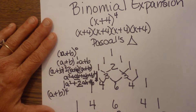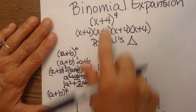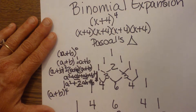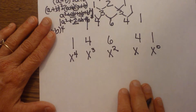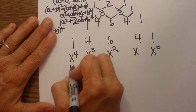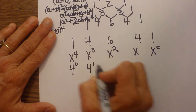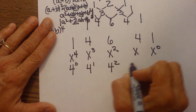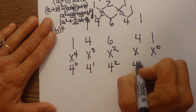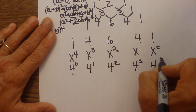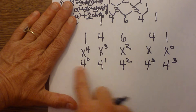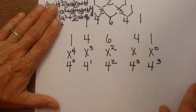For the second term, I take four and ascend the exponents: four to the zero, four to the first, four to the second, four to the third, and four to the fourth. So I've expanded x plus four and now have my five terms.